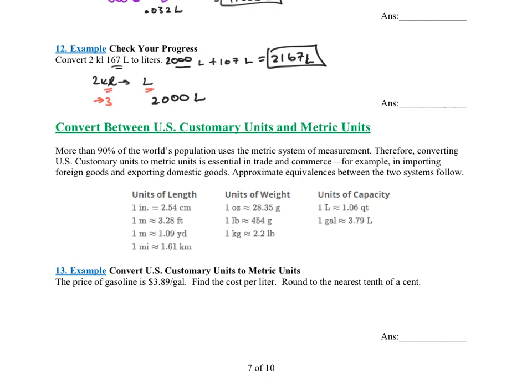So let's look at this. It says convert between U.S. customary units and metric units. So what do we know for sure? We know that one inch is exactly 2.54 centimeters. Everything else from there on out, if you notice, uses an approximation sign.